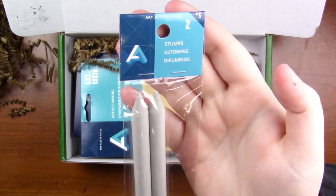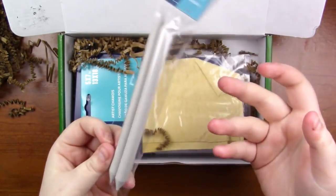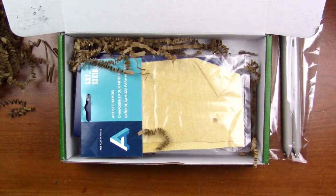So okay first off in the box I'm noticing that they didn't add a card at least not on top. So first off in the box is a couple of art alternatives stumps. You can never have too many of these. I have a million but that's okay because I need a million and two.